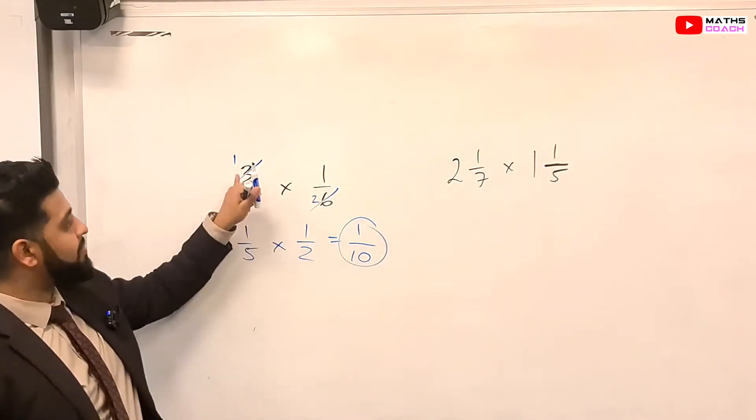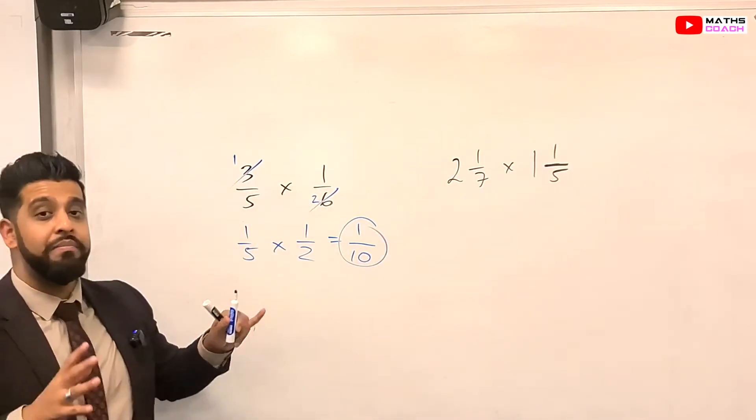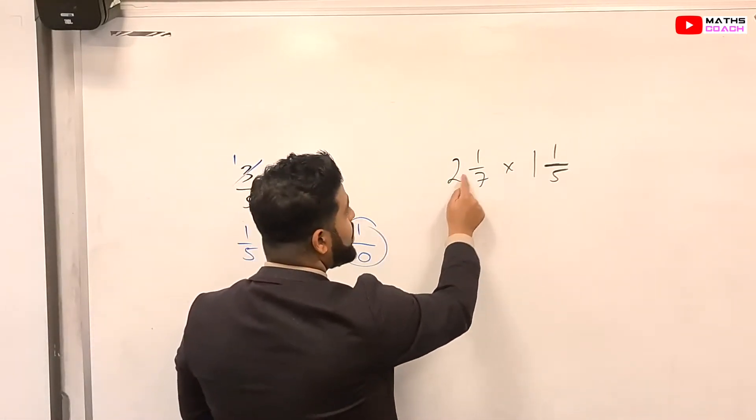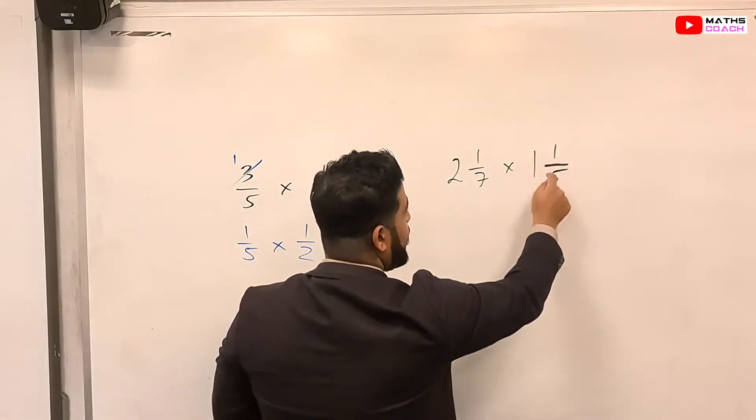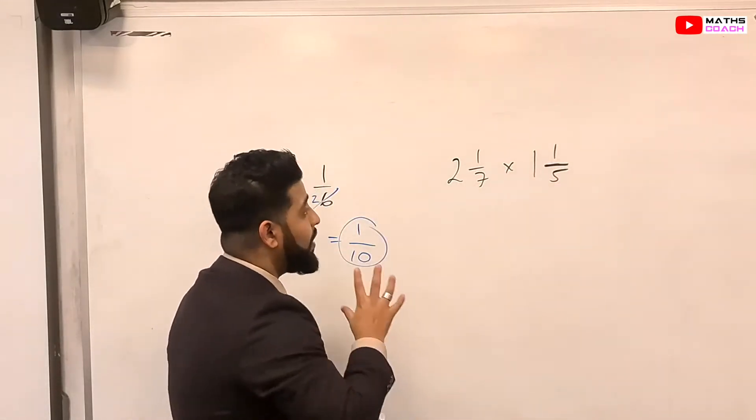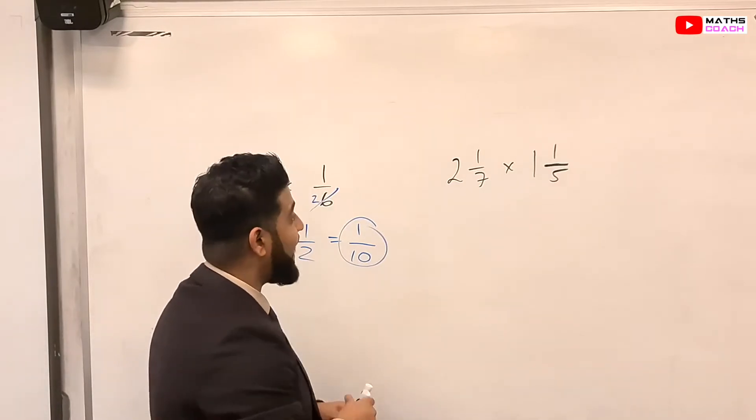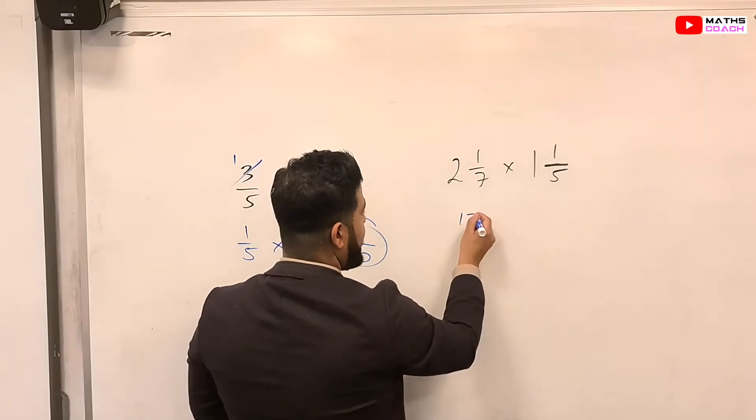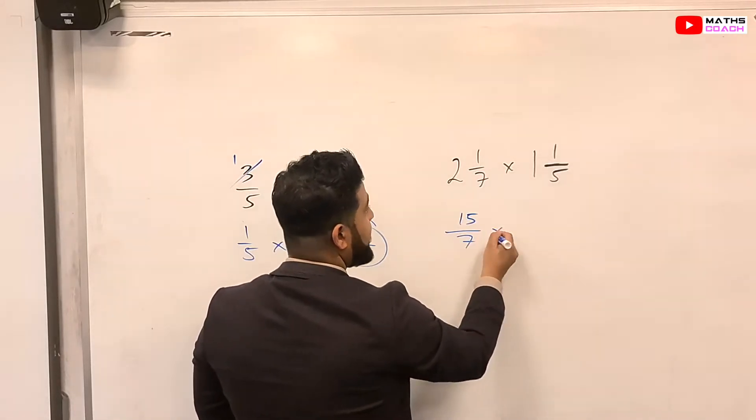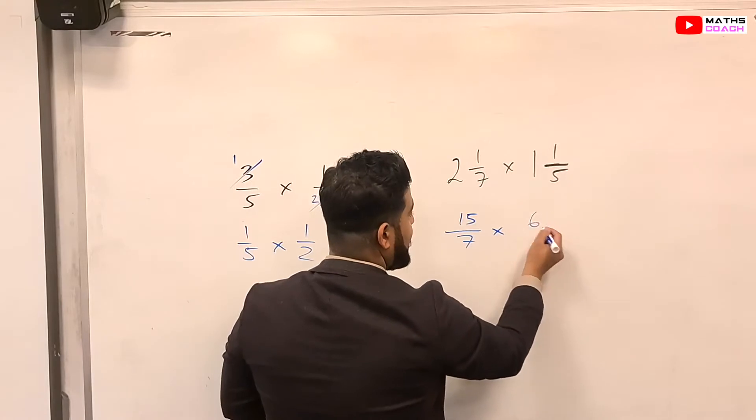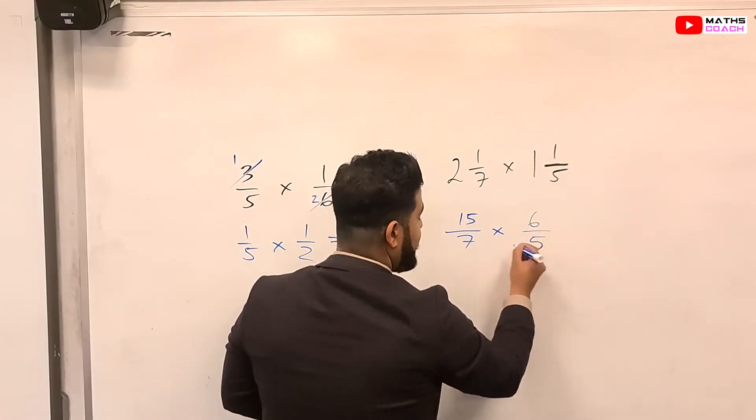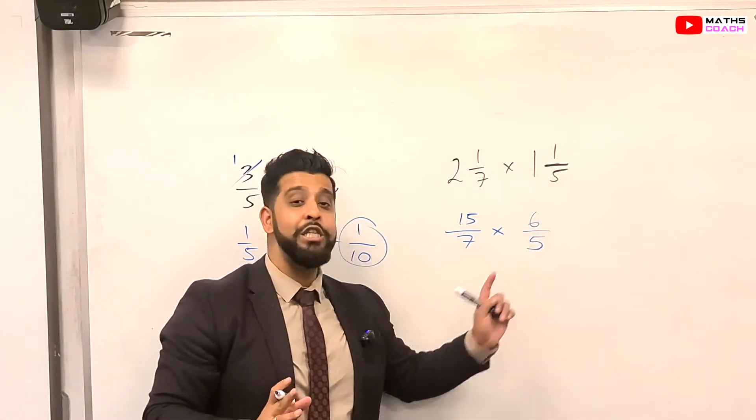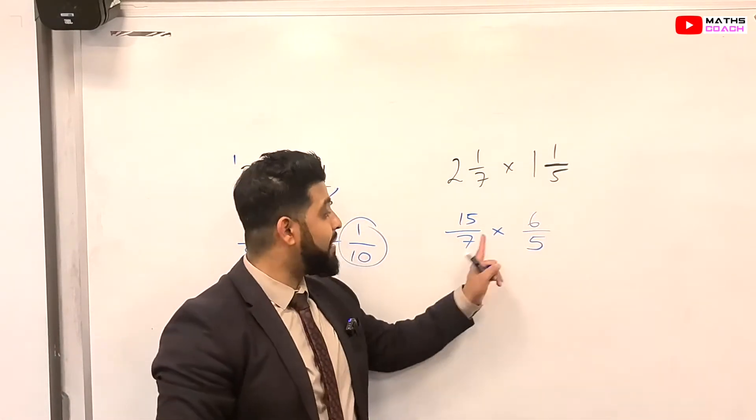So I'm going to try to employ this method as much as I can, because it makes simplifying easier. So let's have a look at this one now, we have 2 1/7 times 1 1/5. Okay, we are going to convert both of them into a top-heavy fraction. So 2 times 7 is 14, plus 1 is 15, over 7, times by 1 times 5 is 5, plus 1 is 6, so 6 over 5. Just testing to see if you understand, do I need to make the denominators the same? No, I don't, because I'm multiplying.